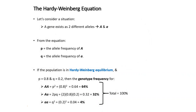Consider a gene with two alleles, capital A and small a. From the equation, p equals the allele frequency of A and q equals the allele frequency of a. If the population is in Hardy-Weinberg equilibrium and p = 0.8 and q = 0.2, then the genotype frequencies for homozygous dominant, heterozygous, and homozygous recessive individuals can be calculated.